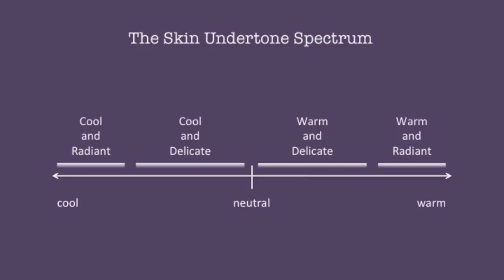We're just talking about the skin undertone itself — not the hair or the features. The skin undertone falls on a spectrum. On the left we have cool and radiant, the coolest undertones, who look amazing in cool and bright colors. Moving a little warmer but still cool, we have cool and delicate, who look amazing in cool muted colors. Then we have warm and delicate, who look amazing in warm and muted colors. Finally, warm and radiant at the warmest side of the spectrum look amazing in warm and bright colors.